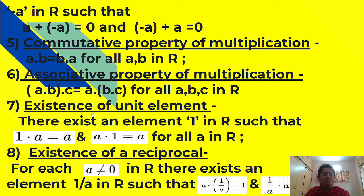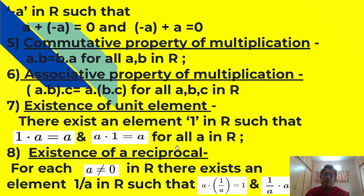Seventh property: existence of unit element. There exists an element 1 in R such that 1 into a is equal to a, and a into 1 is equal to a, for all a in R. If a is 5, then 1 into 5 is equal to 5, or 5 into 1 is equal to 5.